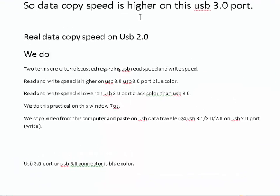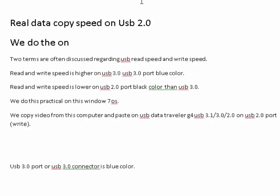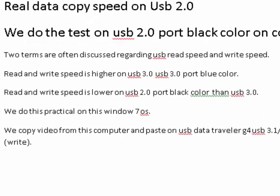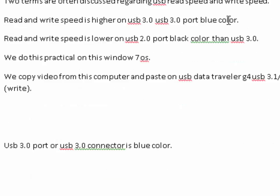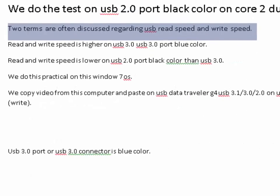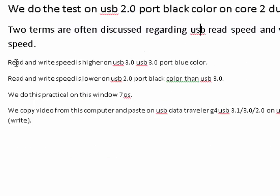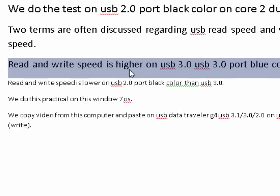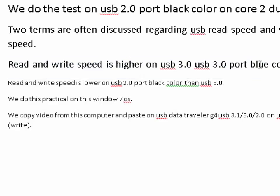Real data copy speed on USB 2.0. We do the test on a USB 2.0 port, black color, on a Core 2 Dual PC. Two terms are often discussed regarding USB: read speed and write speed. Read and write speed is higher on USB 3.0, which uses a blue-colored port, and lower on USB 2.0, which uses a black-colored port.